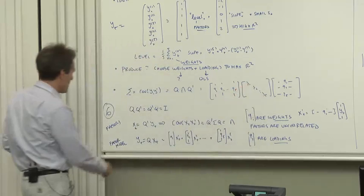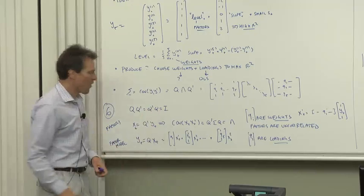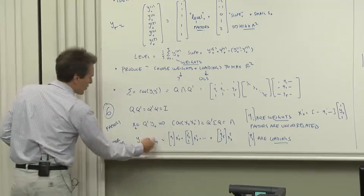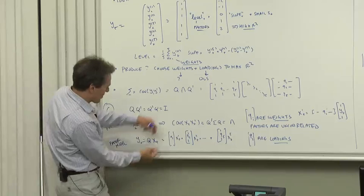Well, how do we get from factors back down to the data? Suppose we form y is q times x. Well, q q prime is y. So that, in fact, is going to work. That is the loadings. That just proves that you recover the y from the x's with q itself.